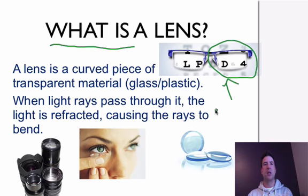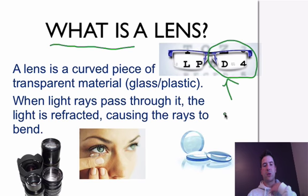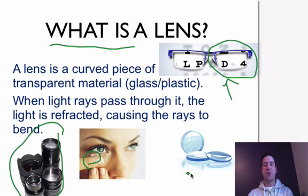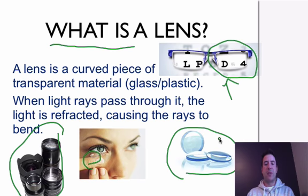We just learned about refraction — light moving from one medium to another. Due to different densities, refraction will occur because the speed of light will either speed up or slow down. Here we have a camera lens, somebody putting in a contact lens, and various lenses used for magnifying glasses and other purposes. There are a lot of different uses for lenses.